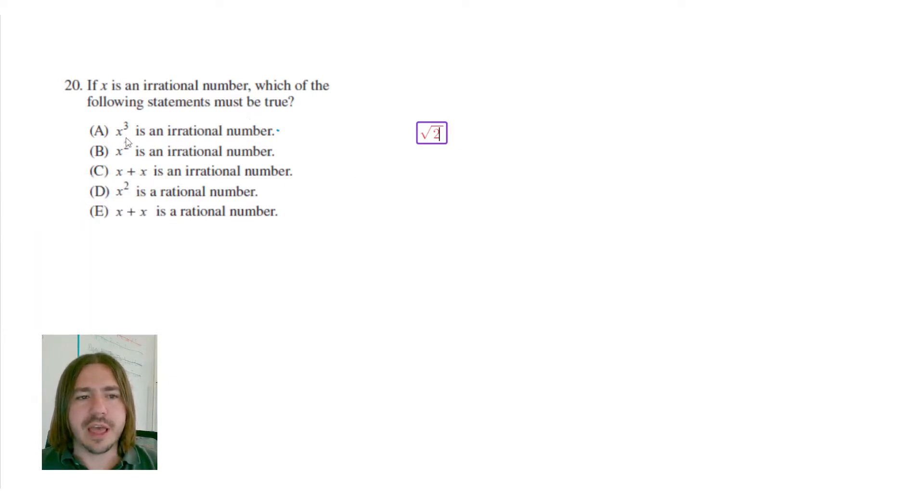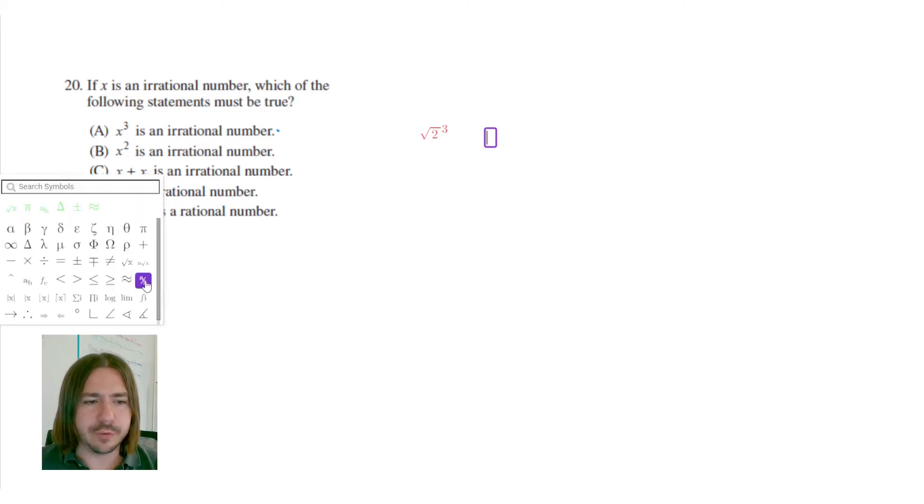Okay, which one must be true? If I cube this, it is going to still be irrational. This is still going to be irrational, so we can't eliminate this quite yet, but it says which of the following must be true? So there could be another irrational that, if I cube it, would not be irrational. And the one that comes to mind would be like the cube root of 2. So if I have the cube root of 2, and I cube that, let's put that in parentheses. If I cube a cube root, those two exponents will reduce each other to 1, and so I just end up with 2.